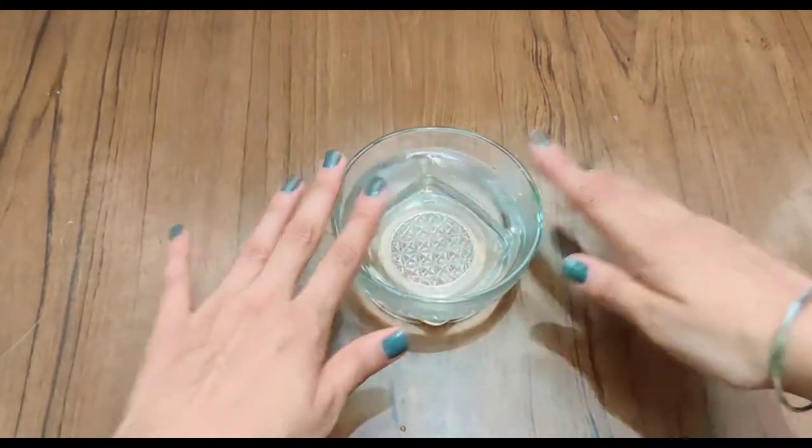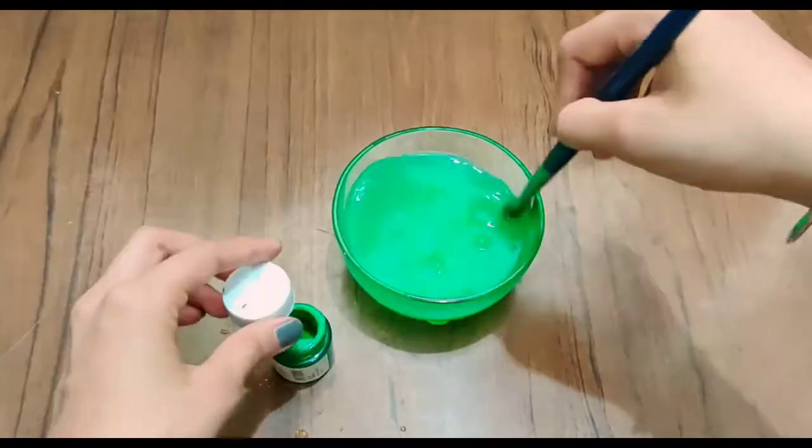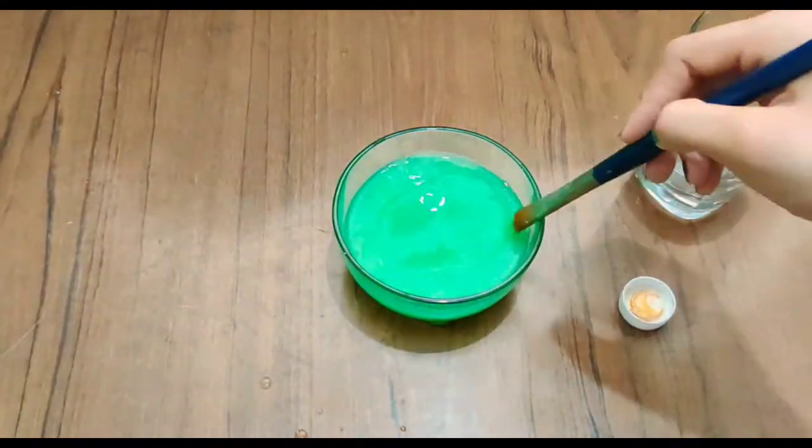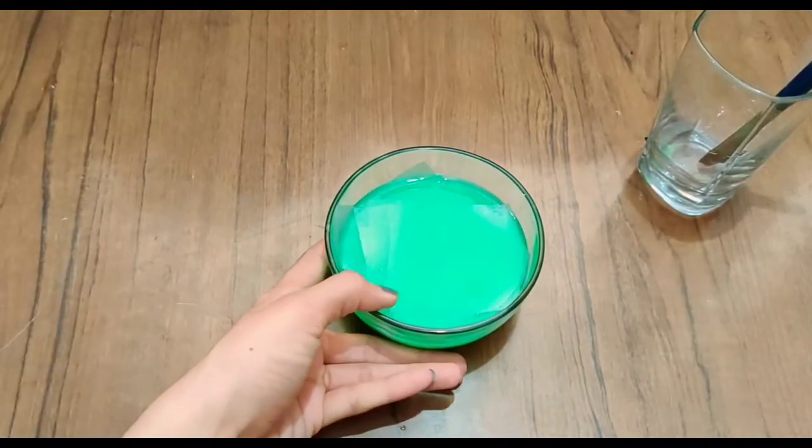Now I will also pour some water in a bowl and add light green acrylic color and golden pearl color, and put some pages in that also. Let them dry.